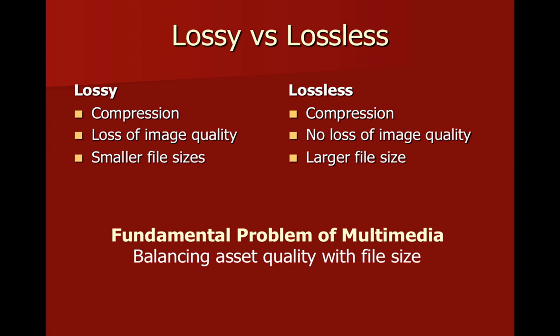Now the different types of file formats have different types of compression. The two compression types are lossy and lossless. A lossy compression type sacrifices some of the image quality in order to reduce the file size. The downside is sacrifice of image quality; the upside is much smaller file sizes. This is compared to lossless compression, where there is no loss of image quality, and even though the compression will reduce the file size slightly, the ending file size is still pretty large compared to a lossy compression format.